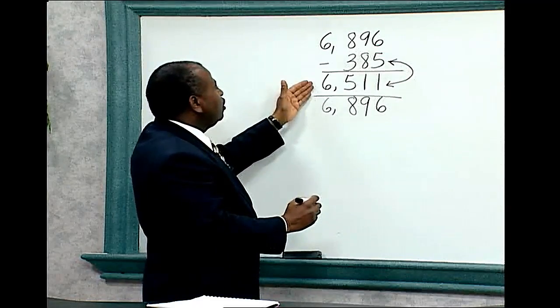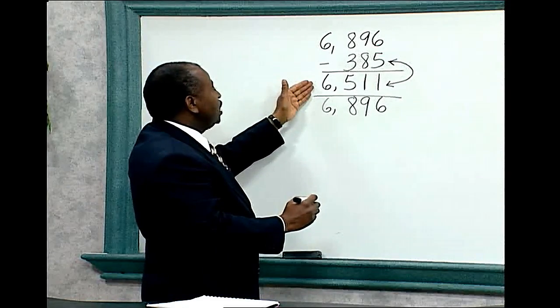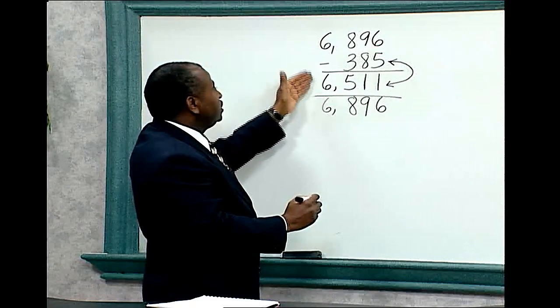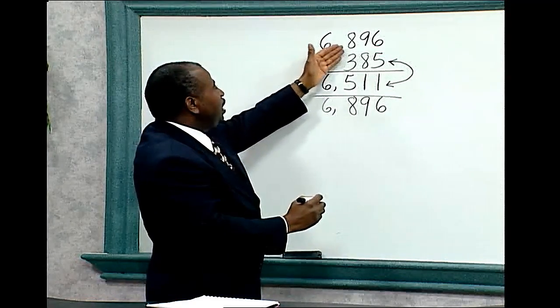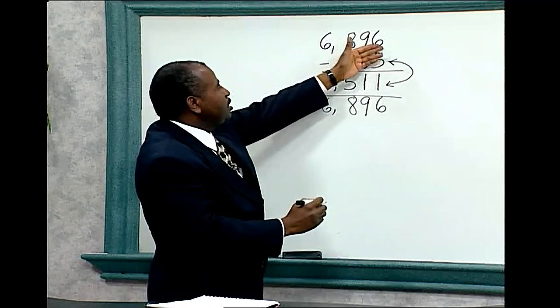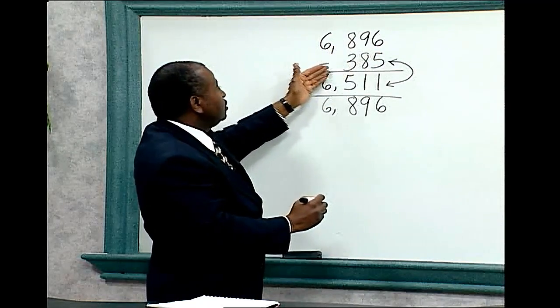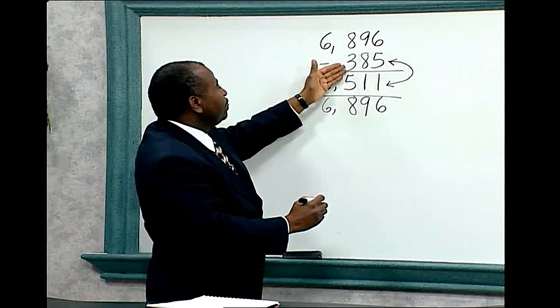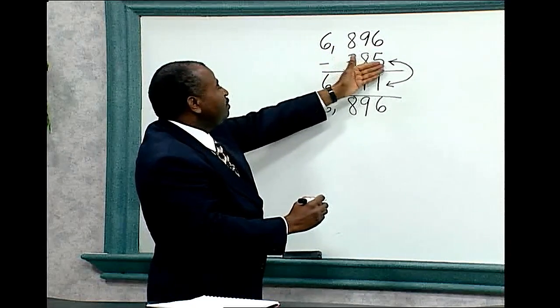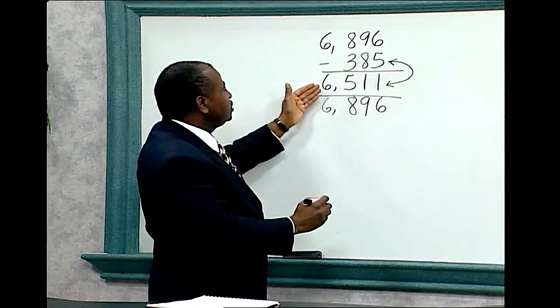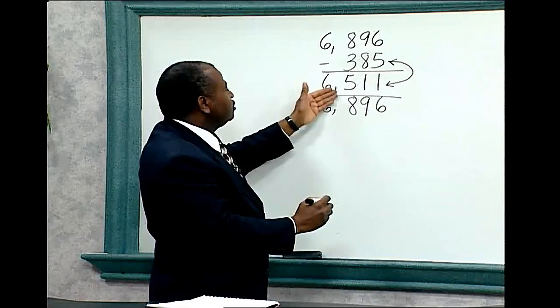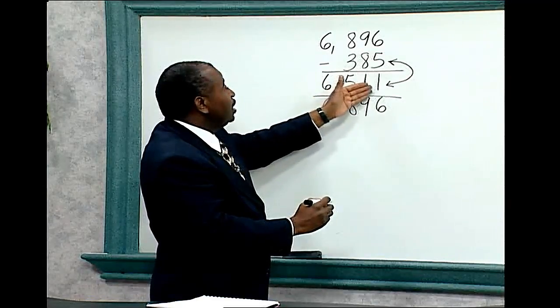Therefore, the solution set is correct. 6,896 minus 385 equals 6,511.